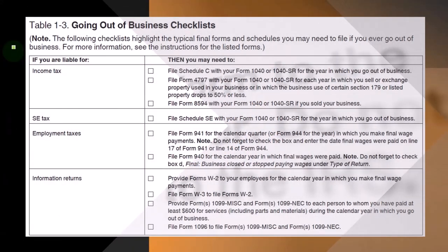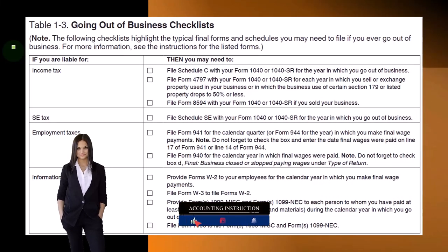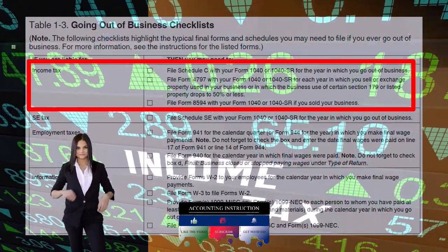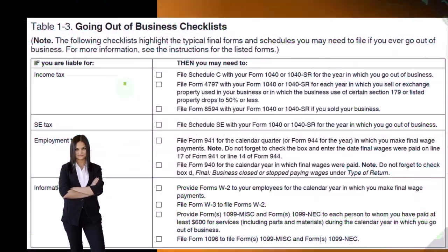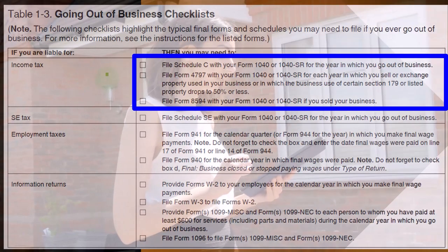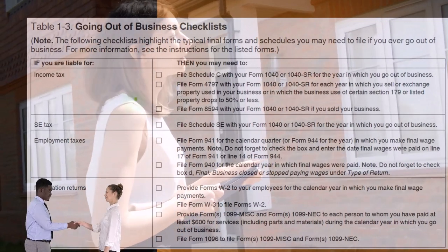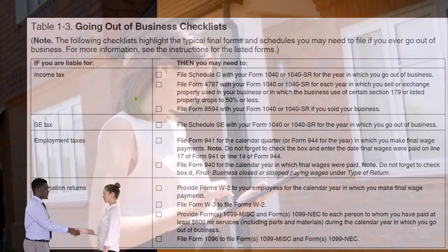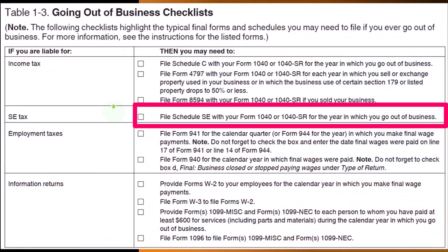The following checklist highlights the typical final forms and schedules you may need to file when going out of business. For income tax, you may need to file Schedule C with your Form 1040 or 1040-SR for the year you go out of business, and Form 4797 for each year you sell or exchange property used in the business — such as depreciable property or Section 179 listed property. File Form 8594 with your Form 1040 or 1040-SR if you sold your business. For self-employment tax, file Schedule SE with your Form 1040 or 1040-SR for the year you go out of business.